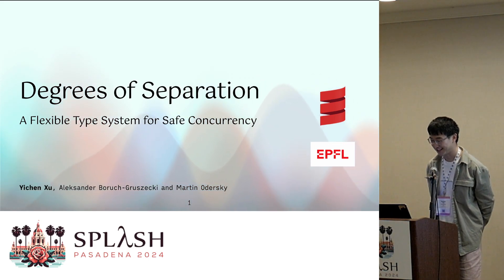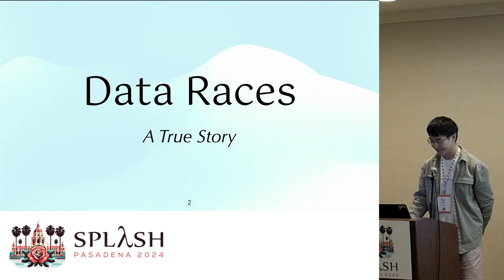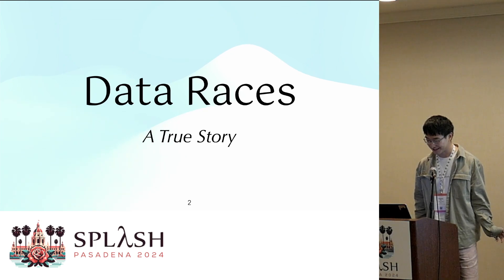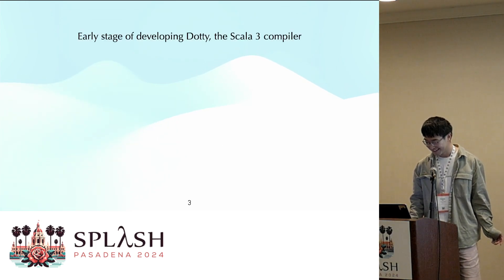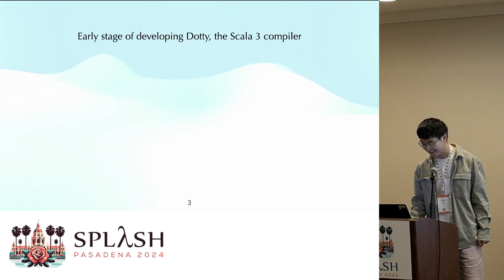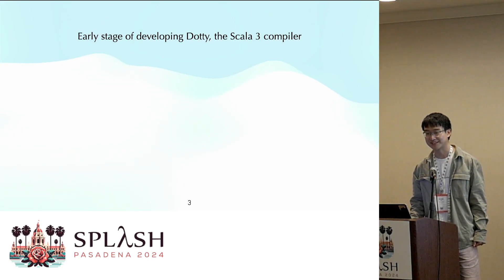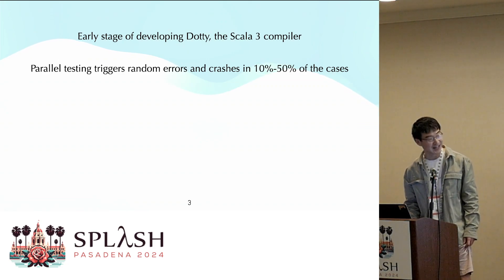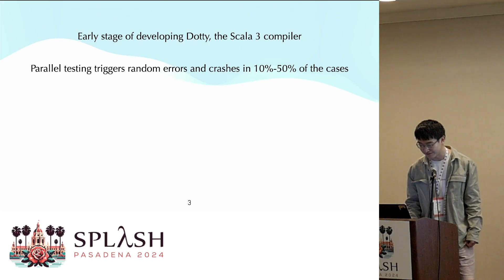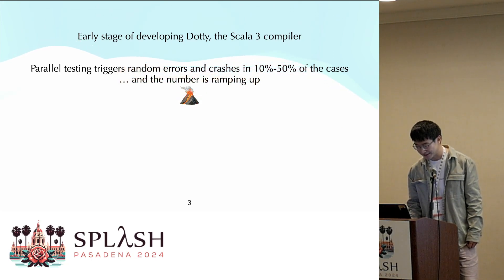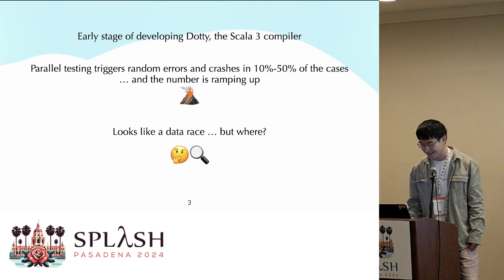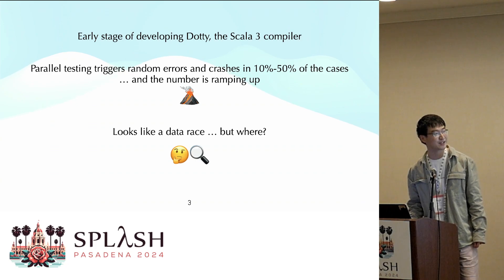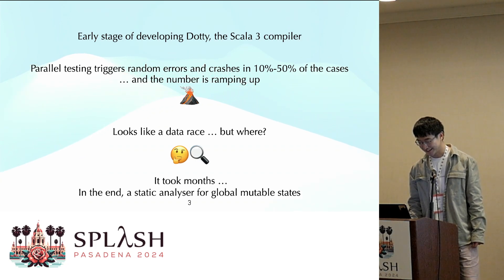This is joint work with my ex-officemate Alexander and my advisor Martin. First, let's talk about data races — they are horrible. Here's a real story from a real-world production compiler that puzzled the developer team for months. This story was shared by my advisor Martin. In the earliest stage of developing the Scala 3 compiler, parallel testing would randomly error and crash in 10 to 50% of cases.